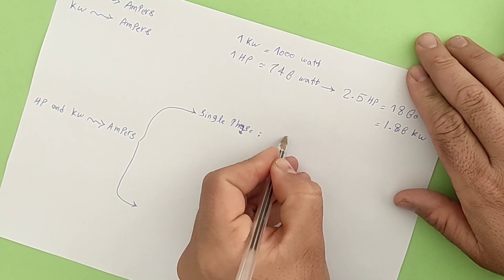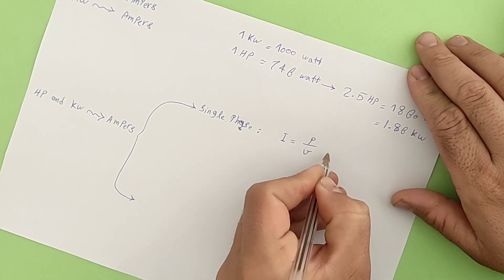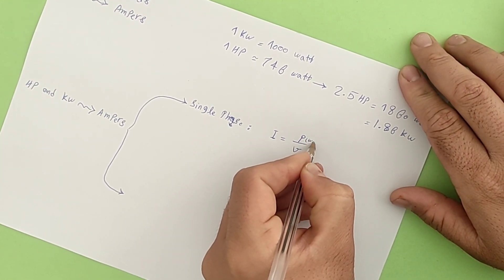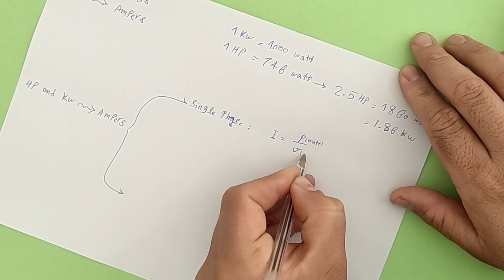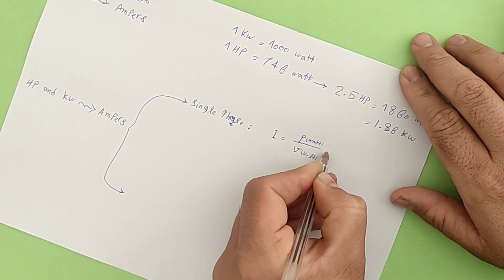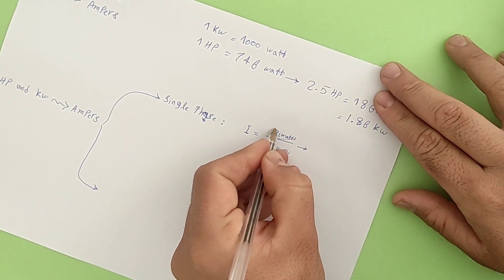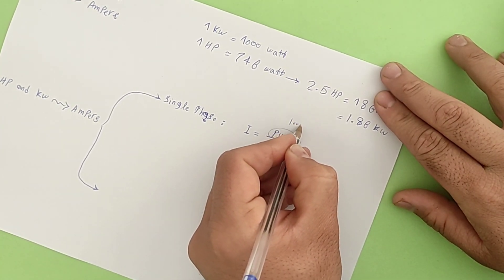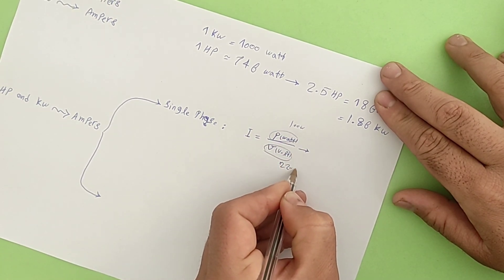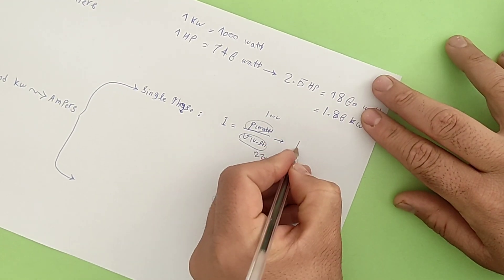The electric current is equal to the consumer's power, written in watts, divided by the consumer's voltage, written in volts. For example, for a 100-watt consumer that works with 220 volts, the current is calculated as follows.